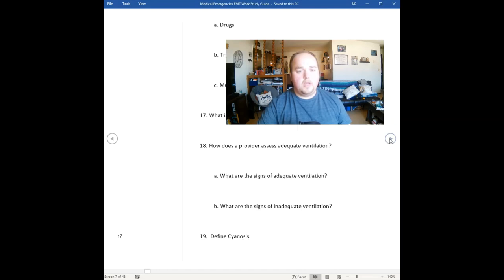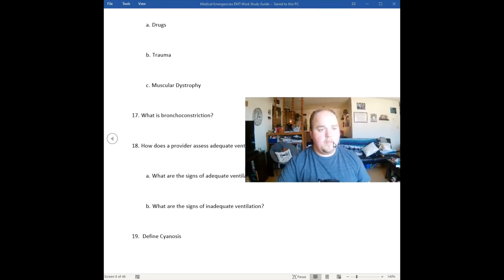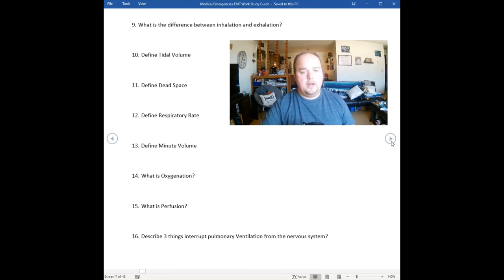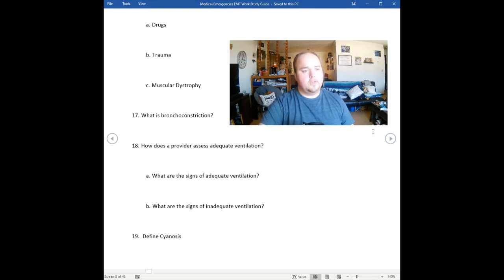When we start taking muscles out and how they communicate through the nerve endings, we can start having issues and interruptions in the control of the nervous system. Let's keep on keeping on. Then you have to describe those three things like drugs, trauma, and muscular dystrophy. What is bronchoconstriction? Bronchoconstriction is basically that boa constrictor wrapping around the bronchioles and it's constricting down. It's tightening down so that we can't get air passage, movement of air through that air passage through the bronchioles to have that exchange of gases down at the alveoli.